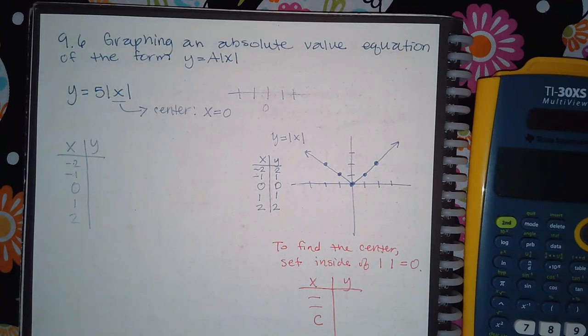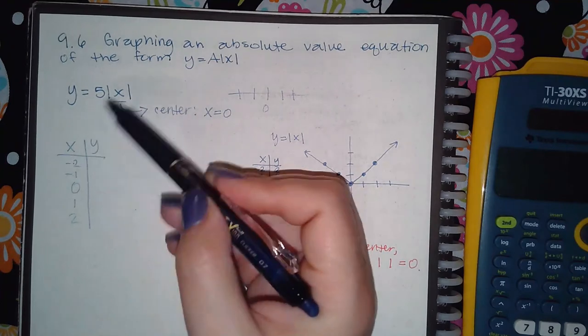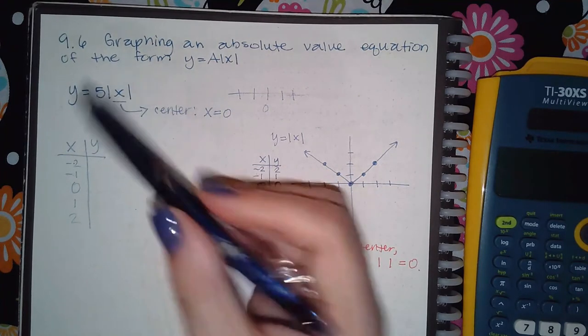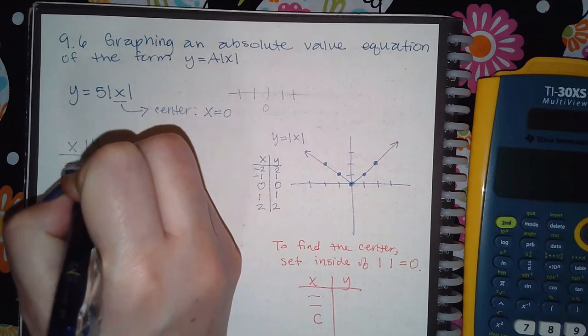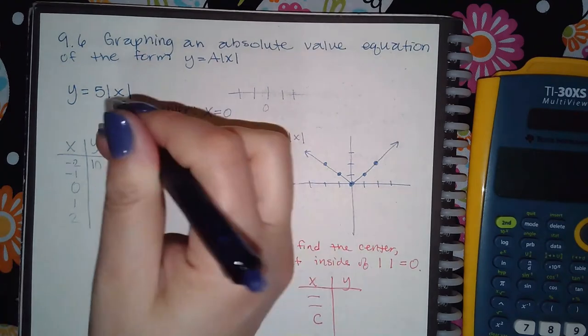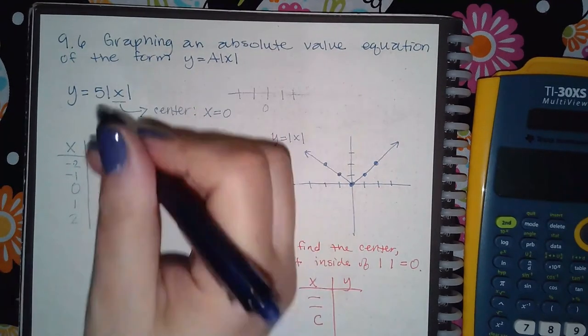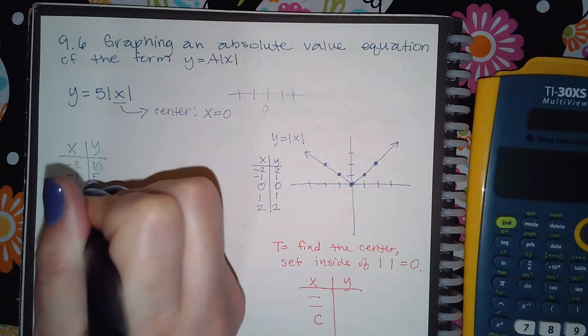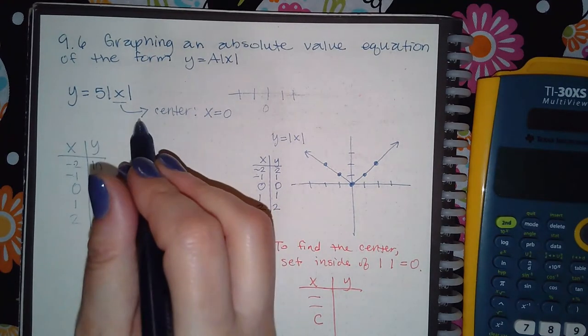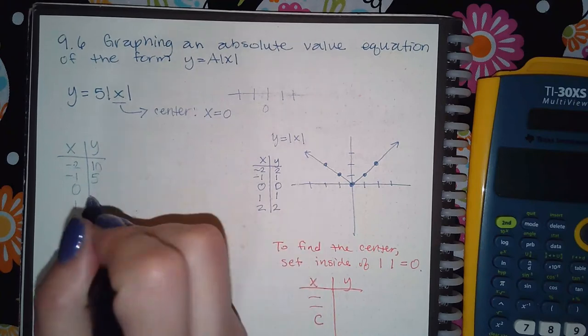And so then when I plug in negative two, the absolute value of negative two is positive two times five is going to give me a positive 10. When I plug in negative one, absolute value of negative one is positive one, but times five will give me five. When I plug in zero, the absolute value of zero is zero times five is zero.